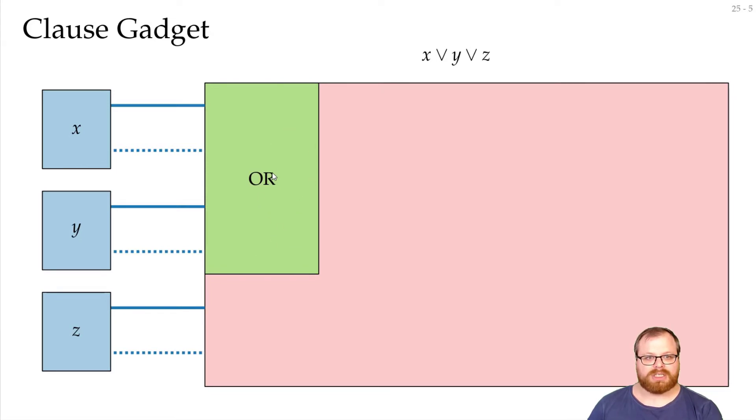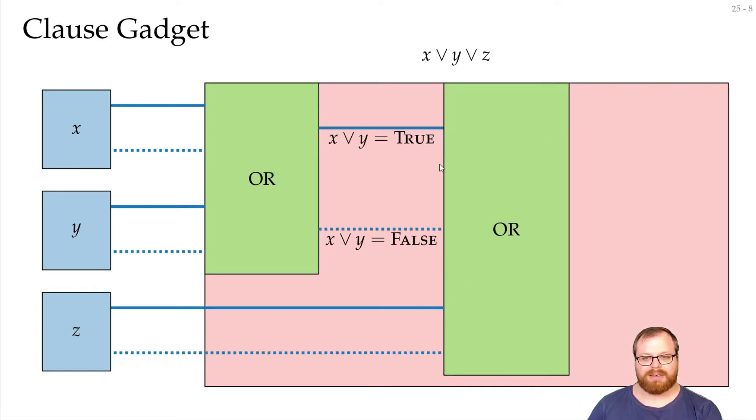In this OR gadget, we want that some bar comes out either at the top, if at least one of those is true, or at the bottom, if both are false. If we have such a gadget, and then we just place a copy of it here, then we have a bar that comes out at the top, if at least one of those is true, and at the bottom, if all of those are false.